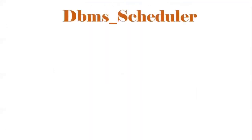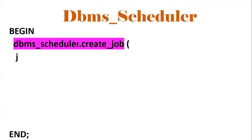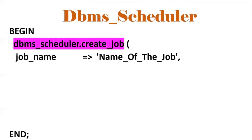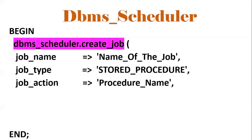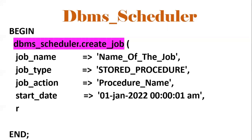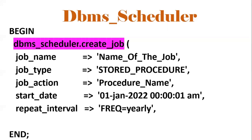DBMS_SCHEDULER is the package provided by Oracle to schedule any package, function, or SQL statement. The syntax is DBMS_SCHEDULER.CREATE_JOB with parameters: job_name — the name of the job — job_type, whether it is a stored procedure or anonymous block, job_action which is the procedure name to execute, start_date for when it needs to start, repeat_interval for whether it runs yearly, monthly, or daily, and enabled set to true.